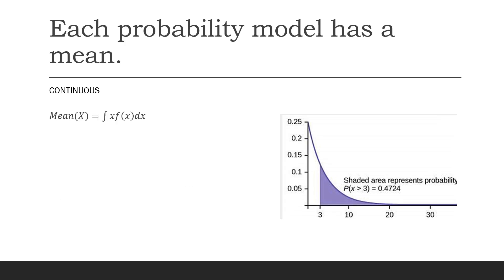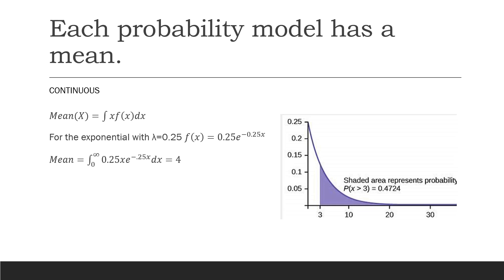We can also find the mean for continuous random variables. Instead of summing over a discrete set of possible outcomes, we integrate over the entire outcome space the random variable x times f(x), the probability density function. For the exponential distribution with lambda equal to 0.25, the probability density function is 0.25 e to the minus 0.25x. If we integrate over the outcome space, which goes from 0 to infinity, x times this probability density function, we find that the mean time until the next event is 4.